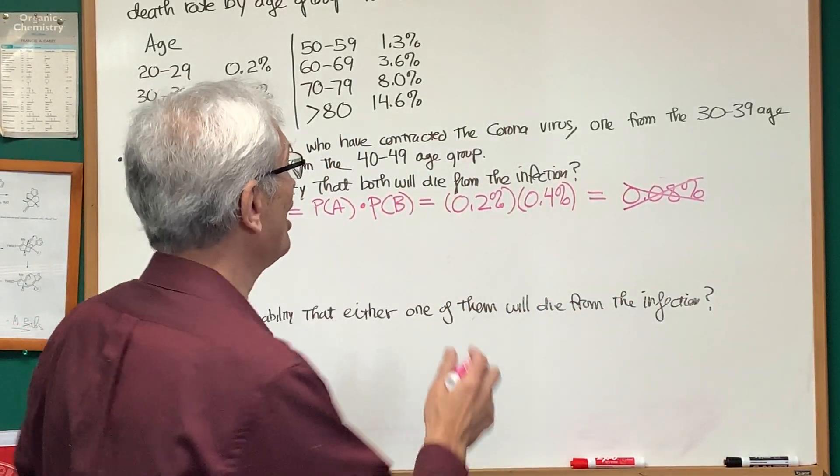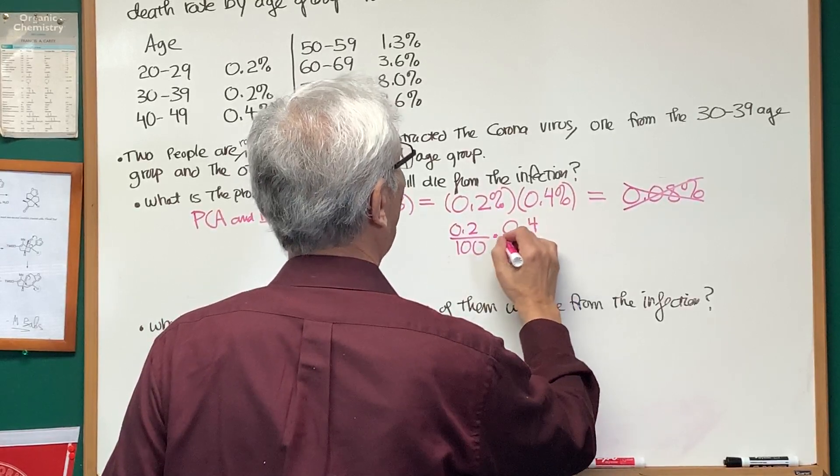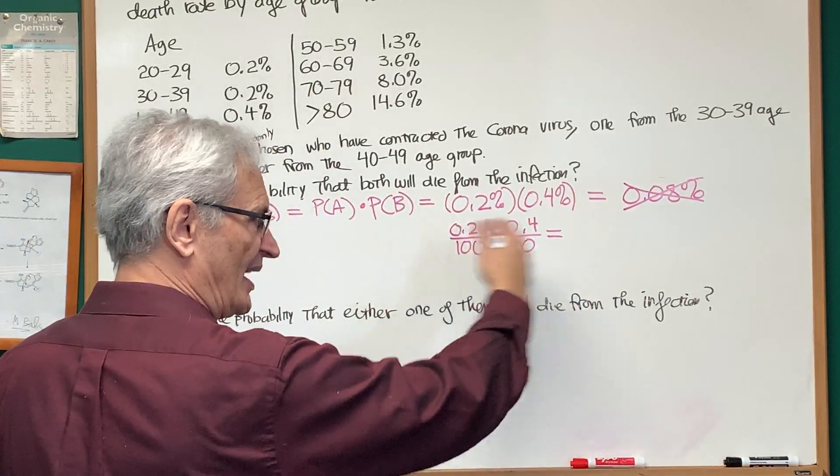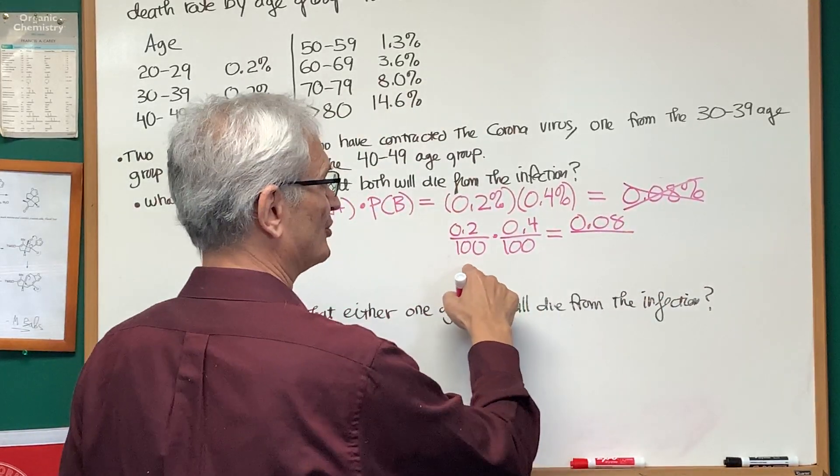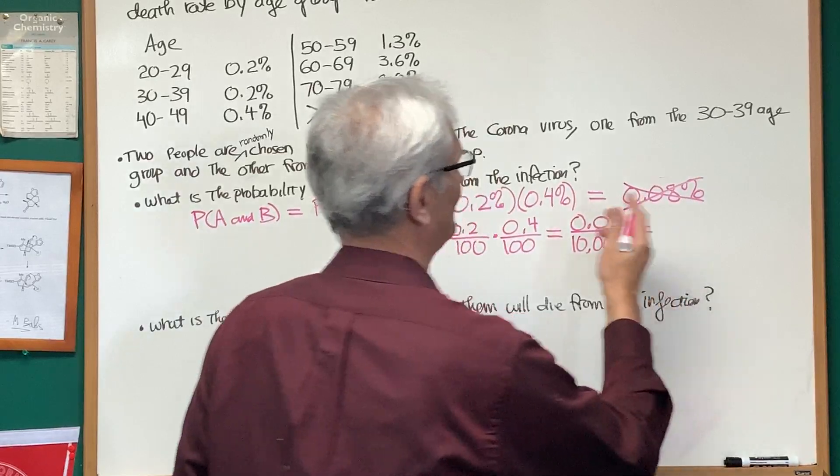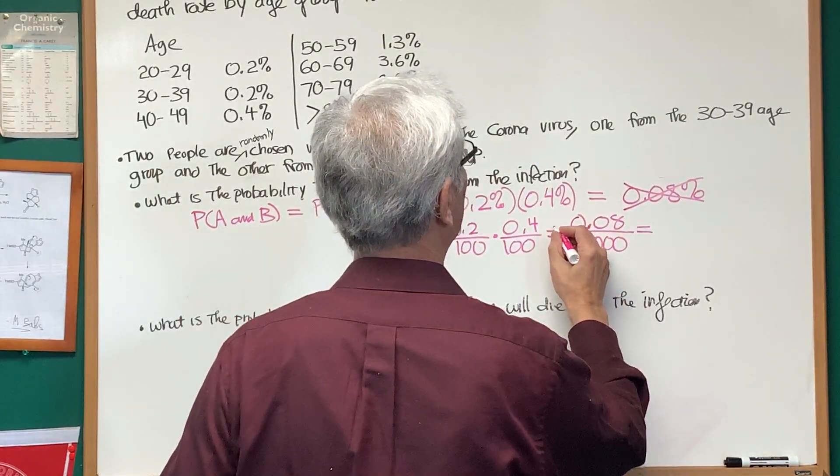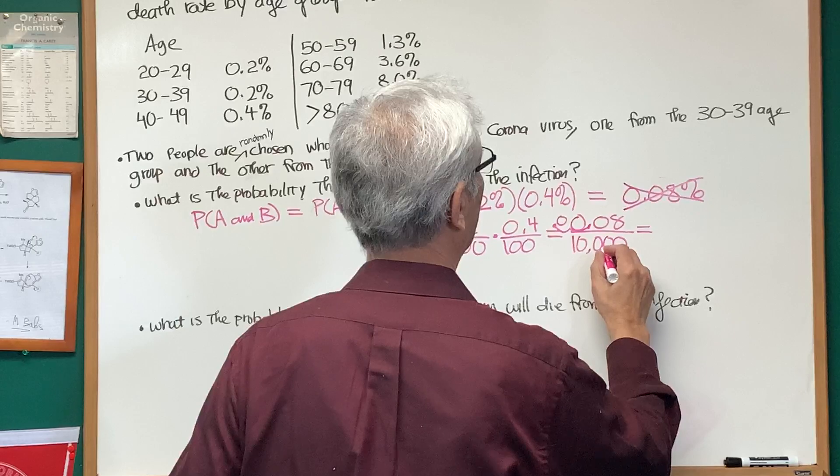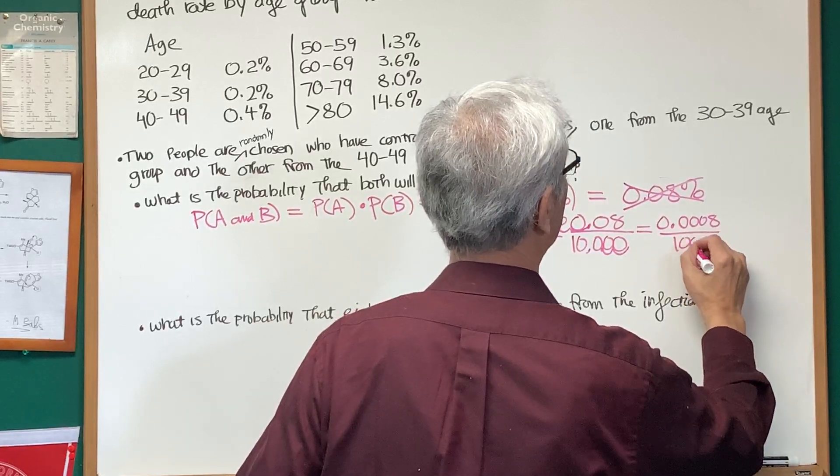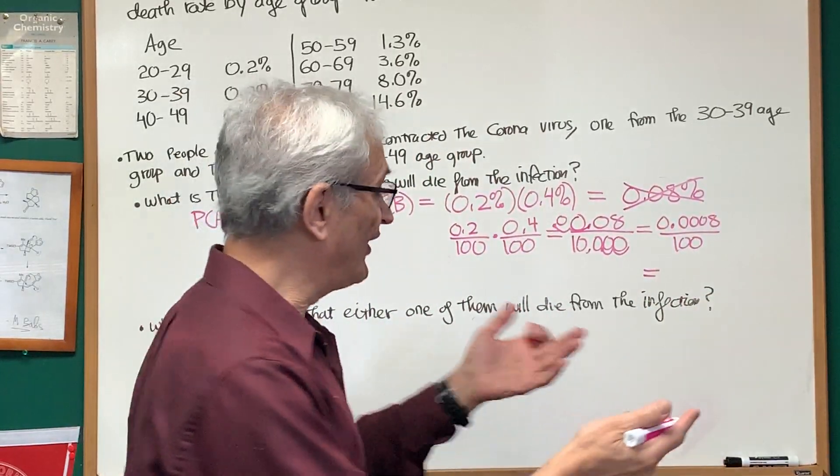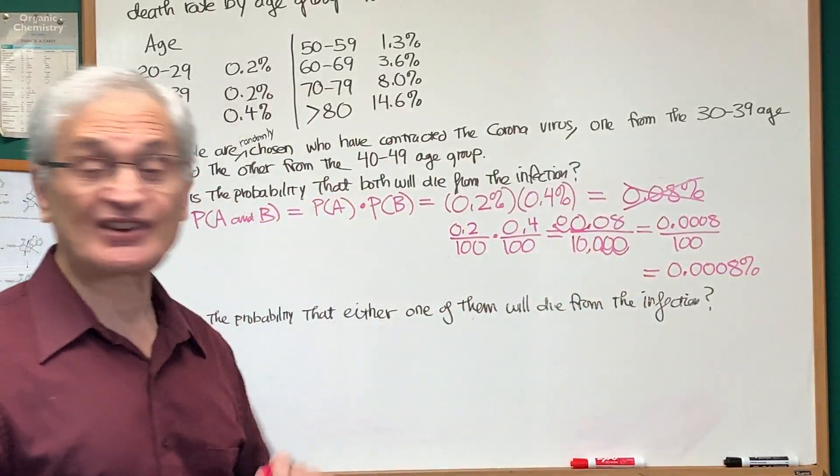Why is it wrong? Because we're ignoring the percent part. Percent means number over 100. So what we have here is 0.2 over 100 times 0.4 over 100. Now let's multiply across the numerators: 0.2 times 0.4 is 0.08, and 100 times 100 is 10,000. Now to express that as a percent, we want to express it as a number out of 100. So I'm going to move the decimal place two places to the left in the numerator, and two places to the left in the denominator. So I will get 0.0008 over 100, and that's a number out of 100, and therefore it translates into a percent: 0.0008%. And that's the answer to our first part of the problem.